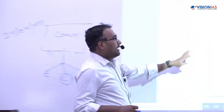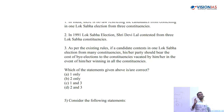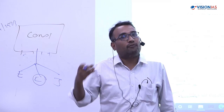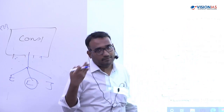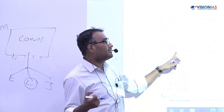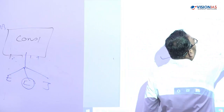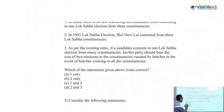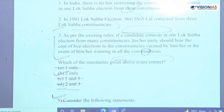The third statement says the contesting candidate's party must bear the cost of by-elections to vacated constituencies. There is no such provision — even our Prime Minister contested from two constituencies in 2014 and won both without any such cost burden. So statements one and three are eliminated. You don't need to know that Devi Lal contested from three constituencies in 1991; by elimination the only option remaining is option B — statement two only.